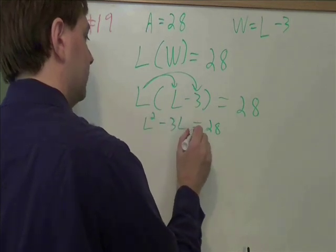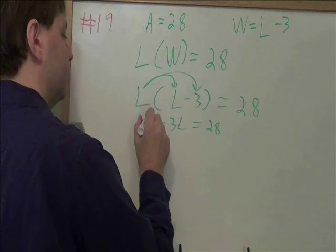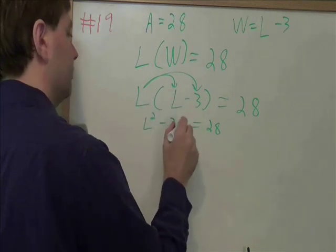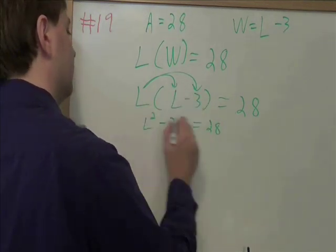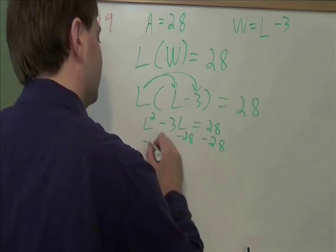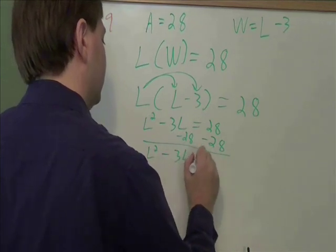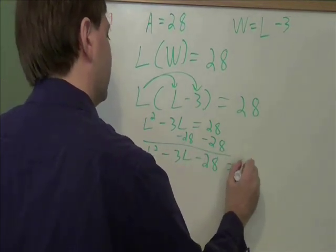We don't get l by itself because we have l squared. If we have l squared and l, that means we're dealing with a quadratic. We need to get everything all on the left side equal to 0. Subtract 28 on both sides. You get l squared minus 3l minus 28 equals 0.